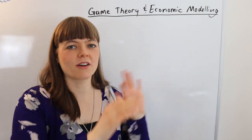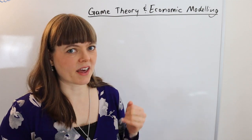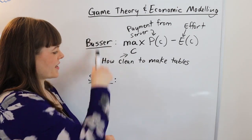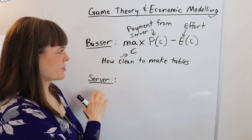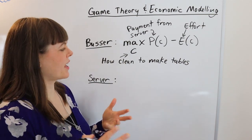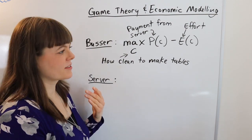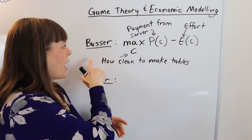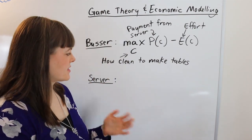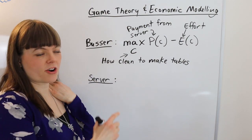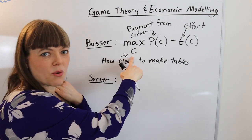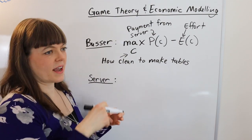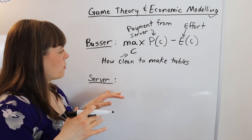Let me set up a problem and then I'll explain how game theory and economic modeling work together. This is a game theory problem between a busser and a server at a restaurant. The busser cleans the tables, the server serves the meals and gets tips from customers. The server decides at the end of the day how much from their own tips to give to the busser. The key choices are the busser deciding how clean to make the tables, and the server deciding what percentage of tips to give the busser.